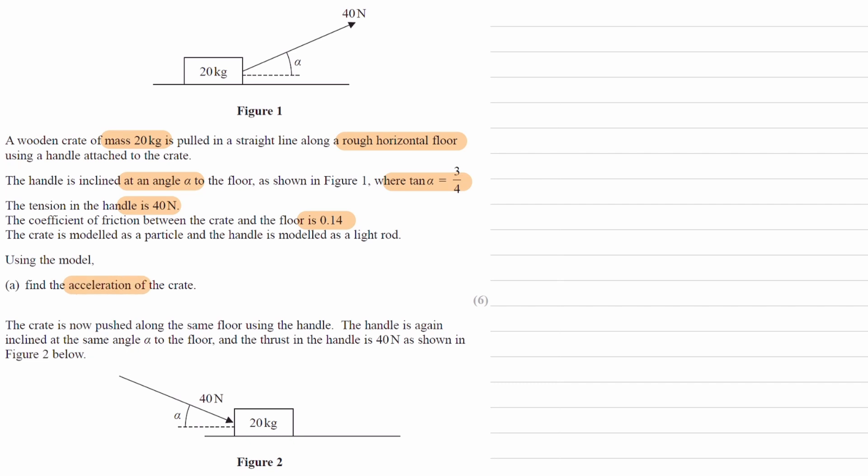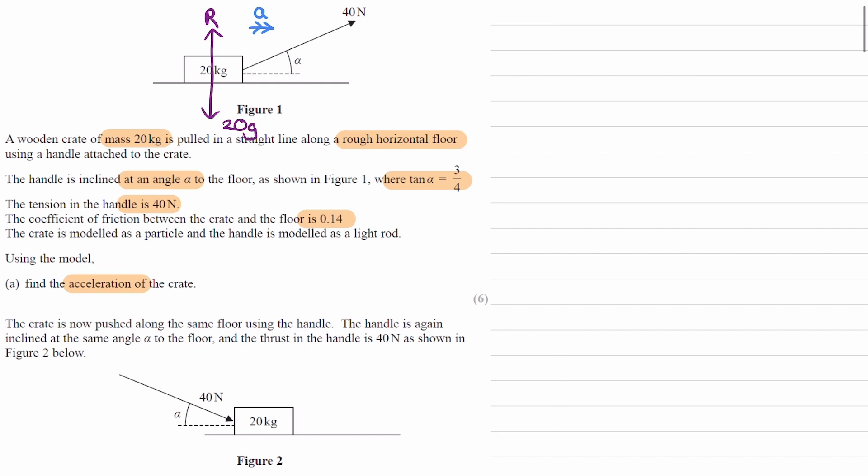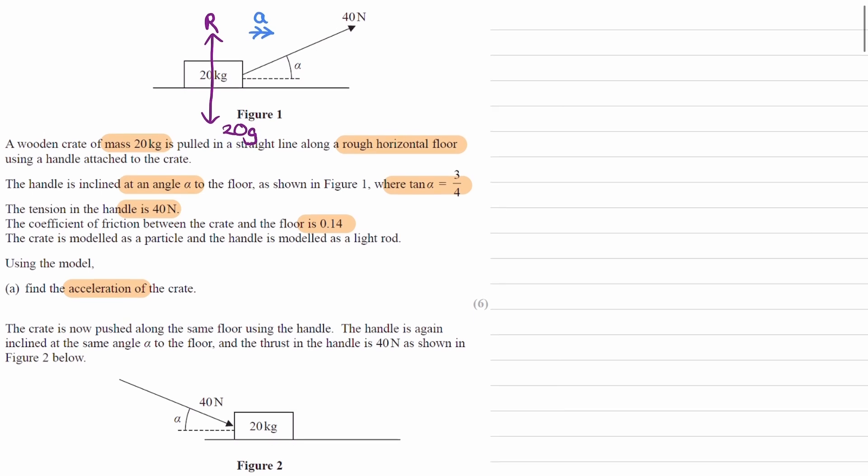So this object is being pulled towards the right by that 40 newton force, so the acceleration acts towards the right. Let's call it A. Let's draw the forces. We'll have a normal reaction force R, a weight force 20g, and a frictional force that acts towards the left. Frictional force always opposes motion, so it will go towards the left. If it's moving, then the frictional force is the max that it can possibly be, that is μR.